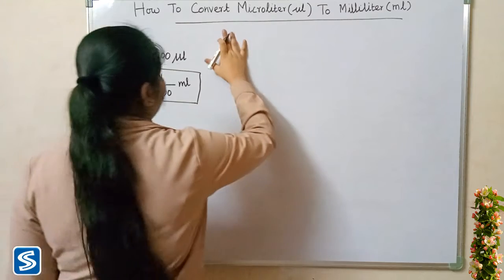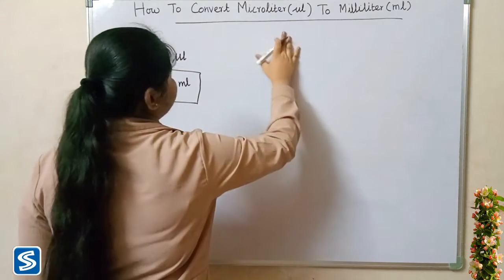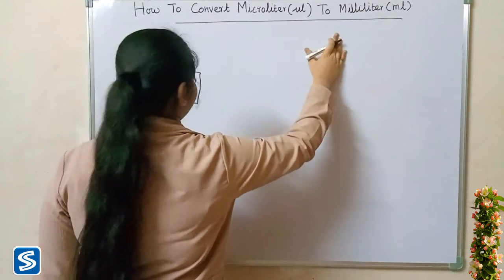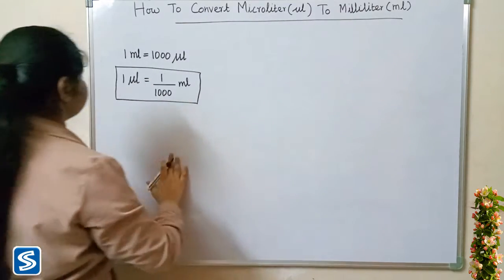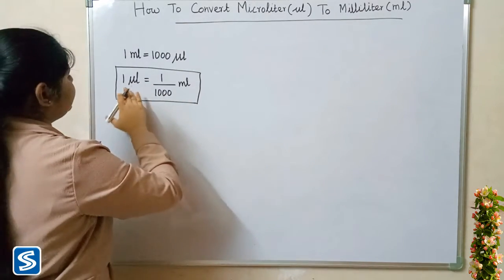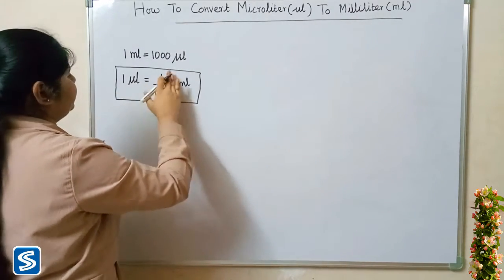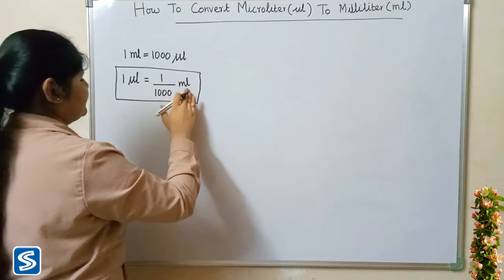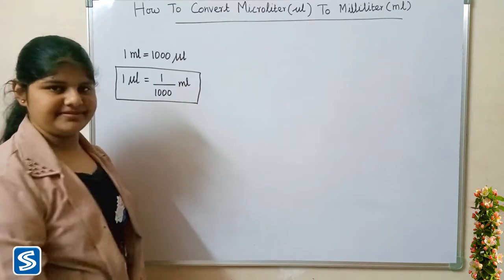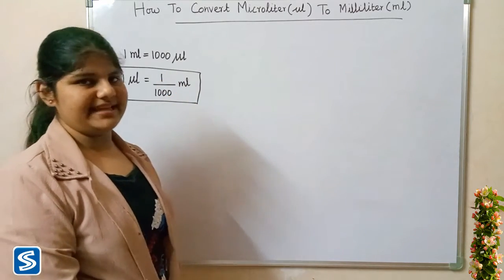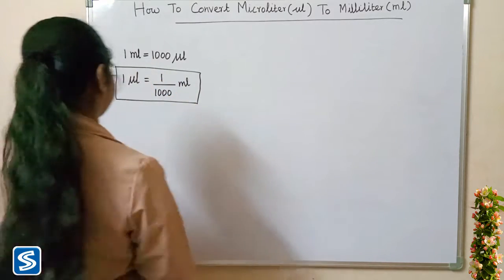So the formula for converting microlitre into millilitre is: one microlitre is equal to one by thousand millilitres. Now we will take some examples.